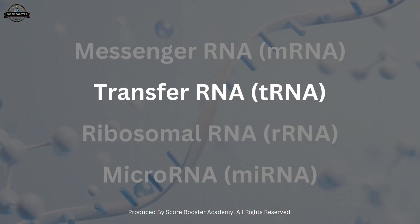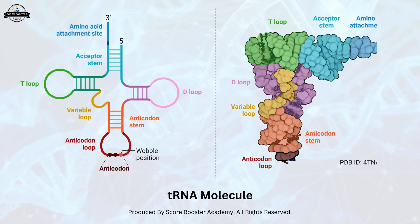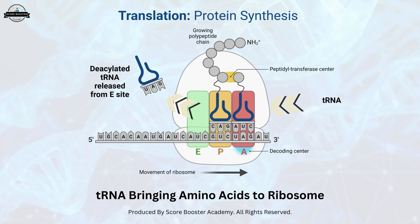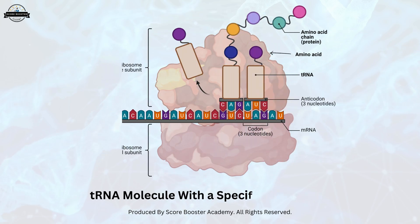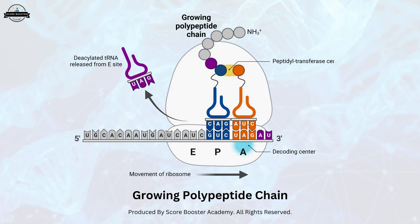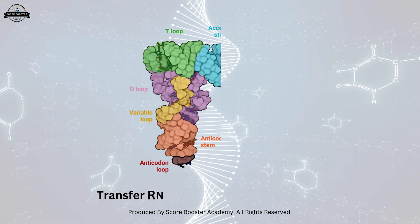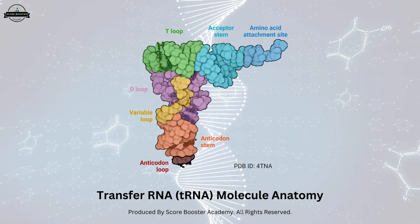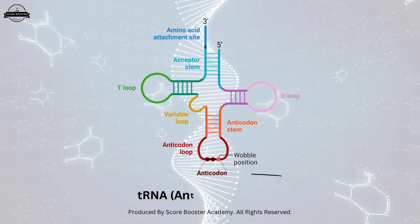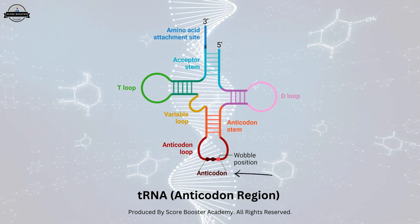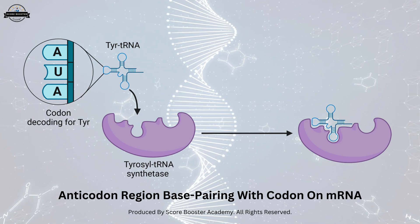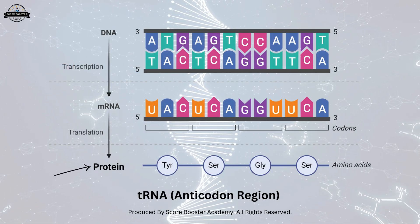Transfer RNA, or tRNA, is responsible for bringing amino acids to the ribosome during protein synthesis. Each tRNA molecule has a specific amino acid attached to it, and it acts as a bridge between the mRNA and the growing polypeptide chain. tRNA molecules are typically composed of a single strand of RNA that folds into a cloverleaf shape. This shape includes an anticodon region that base pairs with the corresponding codon on the mRNA, ensuring that the correct amino acid is added to the growing protein chain.